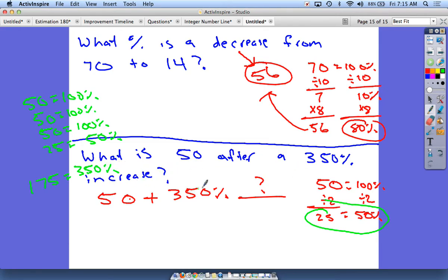So we found what 350 percent is. Now we just need to increase our 50 by that. So I'm going to come down here, I'm going to get rid of this 350 percent and I'm going to replace it with 175. So now if I do 50 plus my 350 percent, which was 175, I get my final total which is 225.